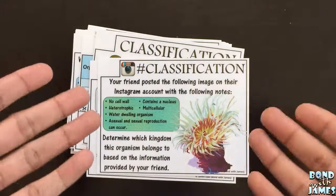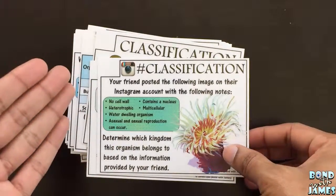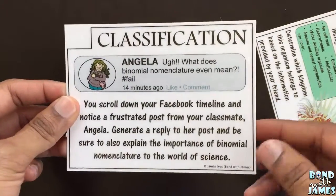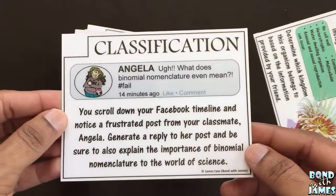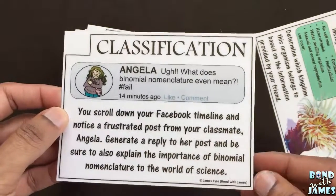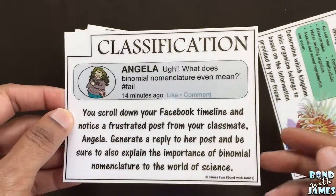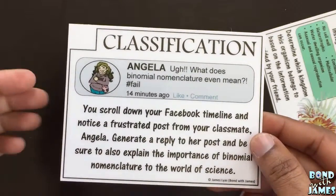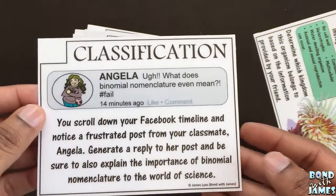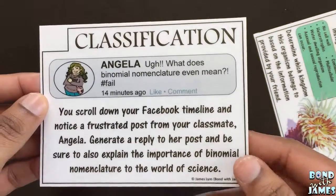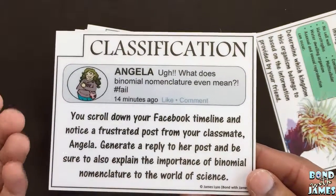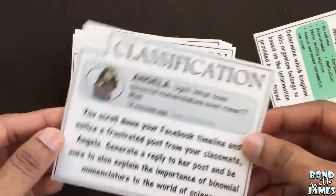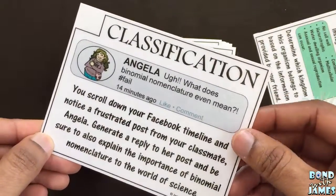So for example, social media — many students like Instagram, and so I incorporated that here in one of the questions. Here on Facebook, I created a fictitious classmate character named Angela, and she's a little bit frustrated: 'What does binomial nomenclature even mean? Hashtag fail.' Posted 14 minutes ago, where students are given a scenario where they are fictitiously scrolling down their Facebook timeline, notice this post from her, and have to generate a reply to her post in order to help her — so that way she can come back to class and enjoy it and not skip.